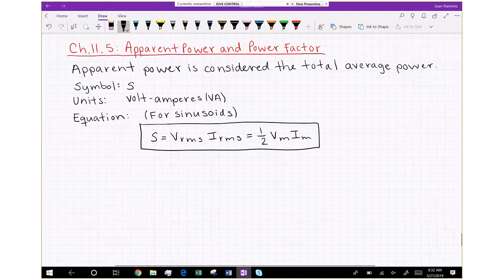So that's apparent power. It's a magnitude, kind of like average real power was. They're magnitudes, they're not varying with time. We'll look into complex power, which actually has a real and imaginary component, in the next section.